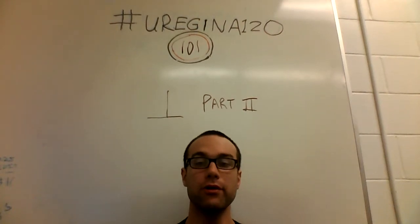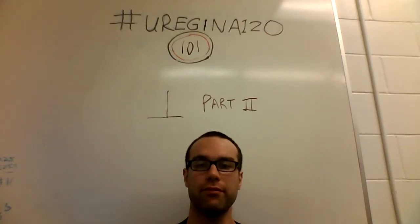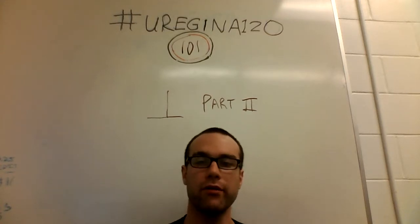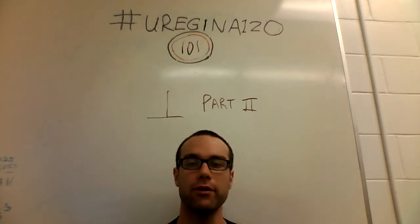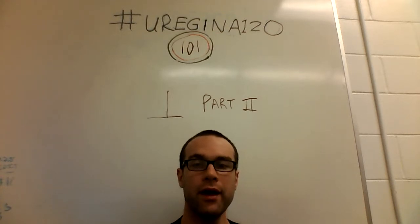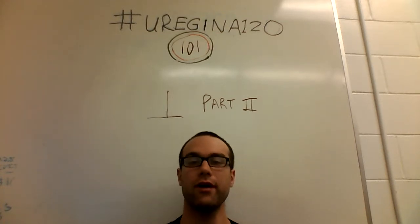Hey, welcome back to Eurogiana 120. I am Jeff Cliff, and this is a series of 120 videos of things that I learned as a student of computer science at the University of Regina. And today we're going to be talking about contradictions again.